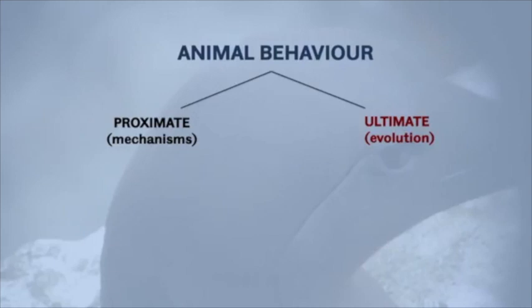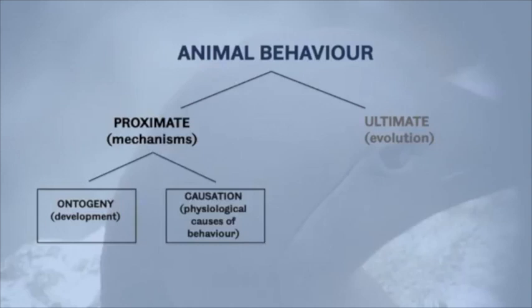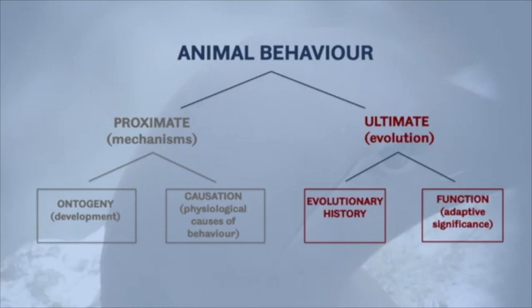We can divide the proximate and ultimate questions into two sub-questions. For proximate: how does the behaviour develop? And secondly, what causes the behaviour? For ultimate: how did the behaviour evolve? And secondly, what is the adaptive significance of the behaviour — what's its purpose?